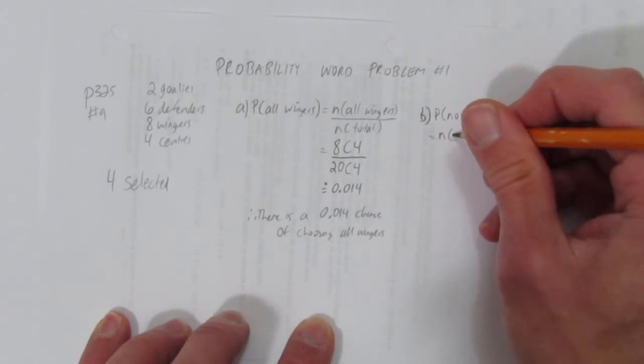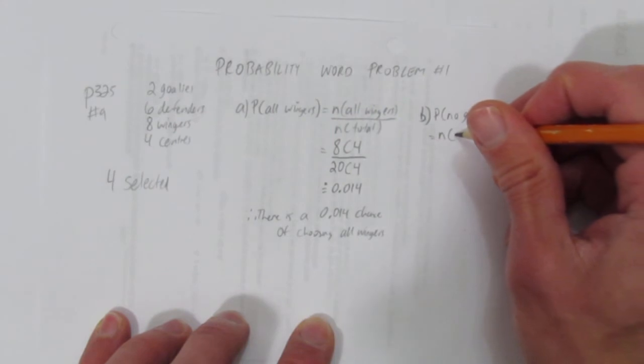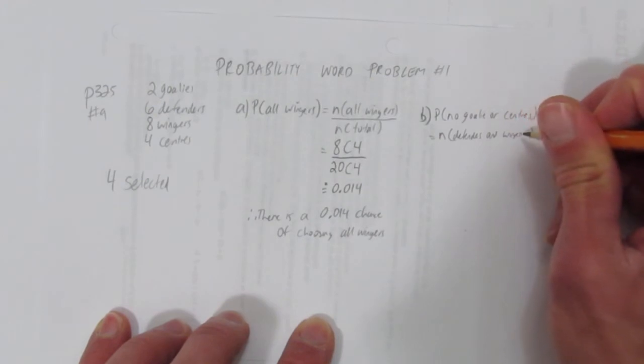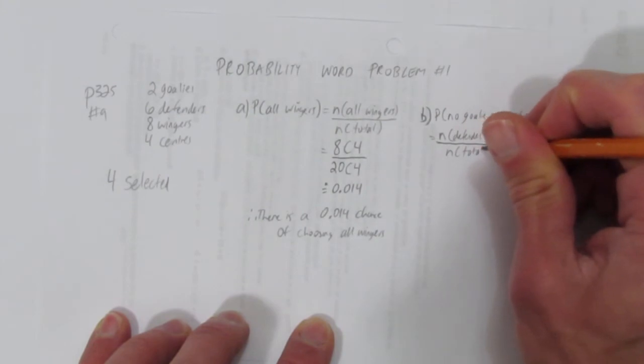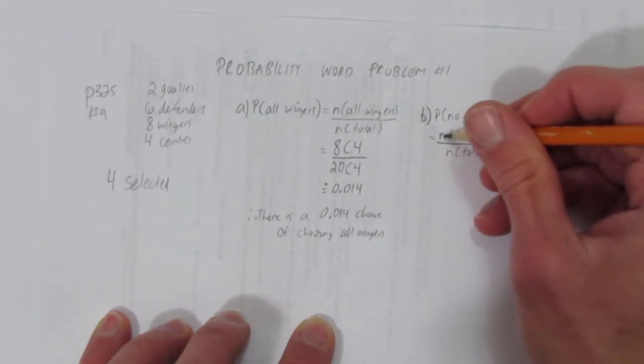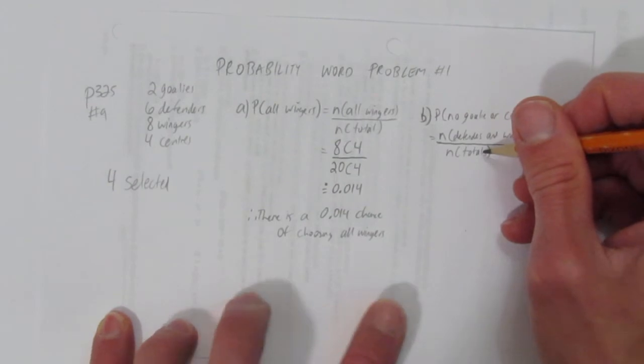But, another way to think of it is, if I'm choosing none of the goalies and none of the centers, that's the number of ways I can choose from defenders and wingers. Again, over the number total. So, let me say that again. If we're looking at the probability of no goalies or centers, then we're choosing from the number of ways we can choose from defenders and wingers over the number total.